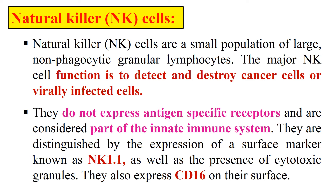Before going into ADCC, we should know what natural killer cells are. These are non-phagocytic cells whose main function is to kill tumor cells or cancer cells and also virus-infected cells. Natural killer cells do not have receptors for antigens, but they have receptors for antibodies and they express markers like NK1.1 and CD16. By analyzing these markers, we can distinguish natural killer cells from the general cell population.